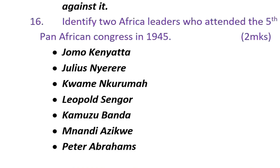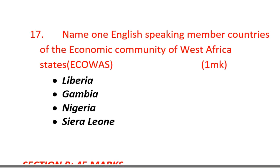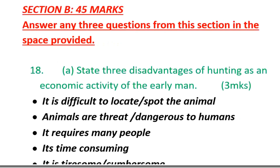Question sixteen: identify two African leaders who attended the Fifth Pan-African Congress in 1945. They include Jomo Kenyatta, Julius Nyerere, Kwame Nkrumah, Leopold Senghor, Kamuzu Banda, Nnamdi Azikiwe, and Peter Abrahams. Question seventeen: name one English-speaking member country of the Economic Community of West African States (ECOWAS) — Liberia, Gambia, Nigeria, and Sierra Leone.